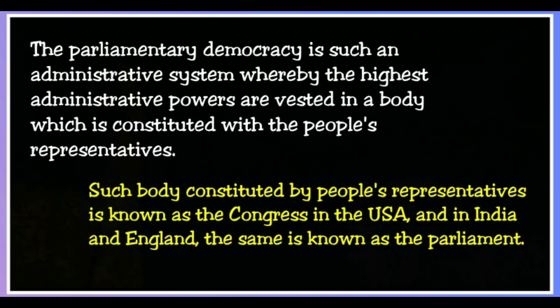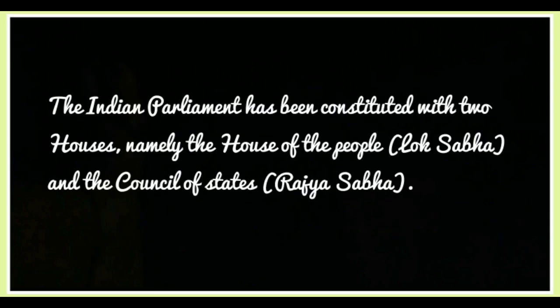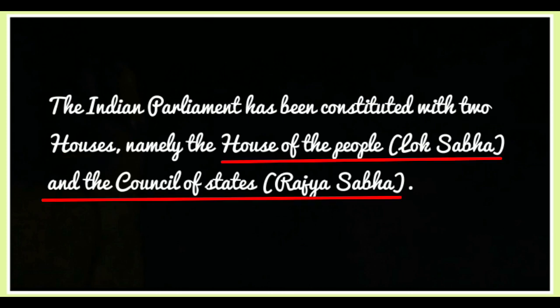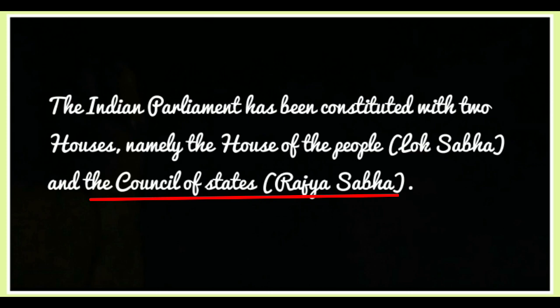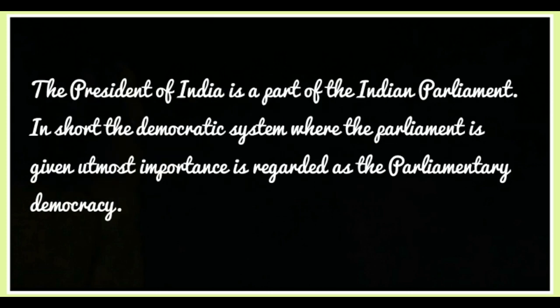The Indian Parliament has been constituted with two houses: namely the House of the People — Lok Sabha — and the Council of States — Rajya Sabha. Lok Sabha means the House of the People and Rajya Sabha means the Council of States. The President of India is also a part of the Indian Parliament.